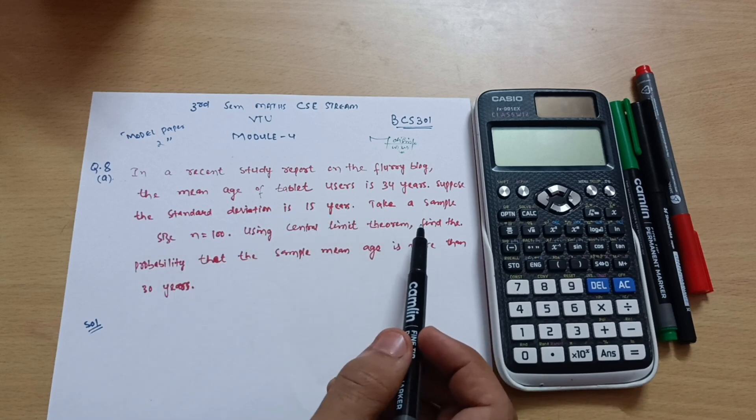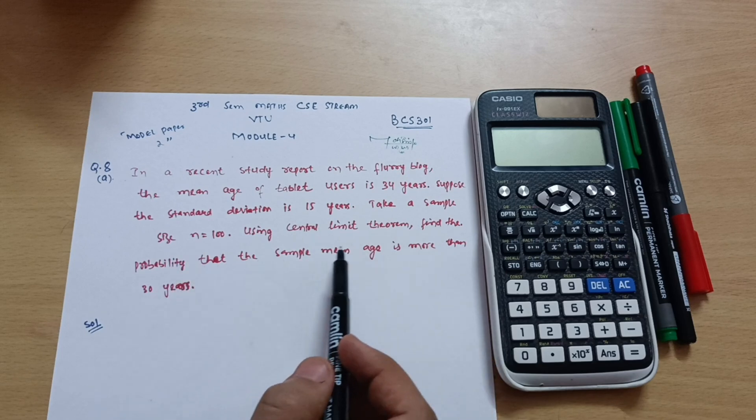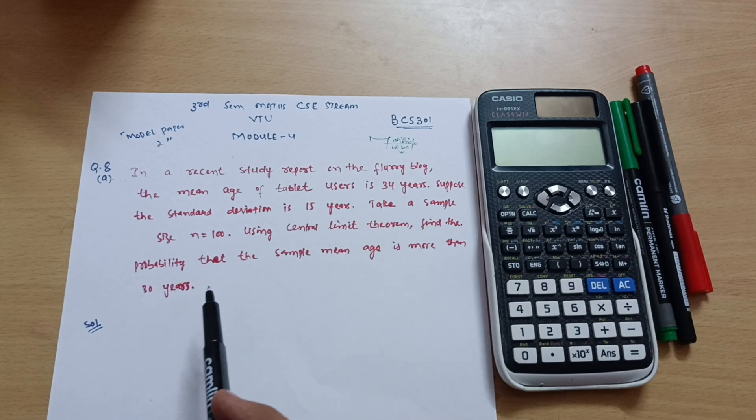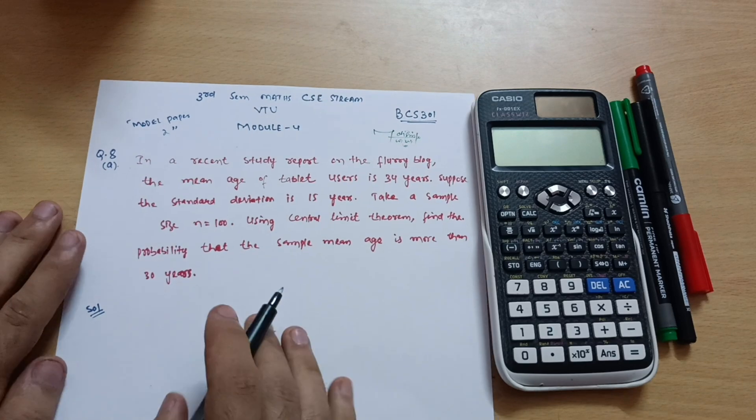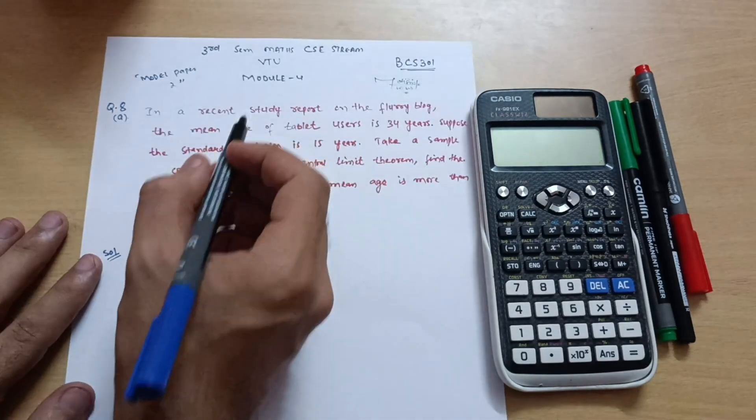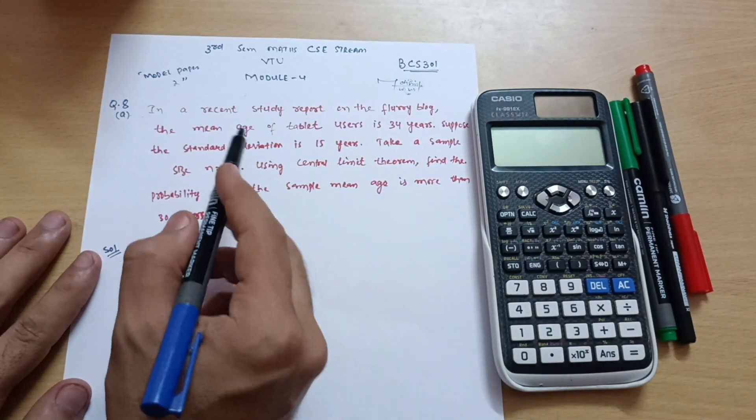Using central limit theorem, find the probability that the sample mean age is more than 30 years. Similar question to what we discussed in the previous lecture. So write down first of all the given data.